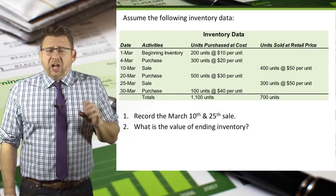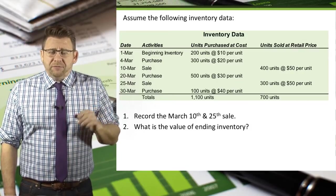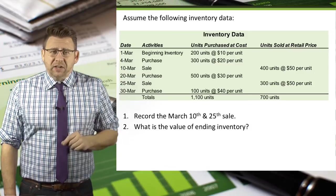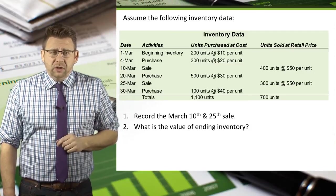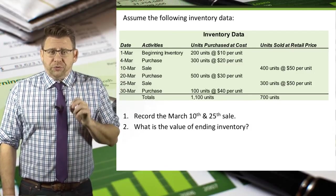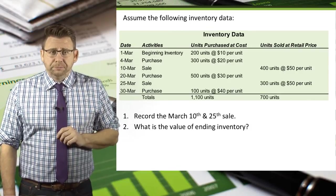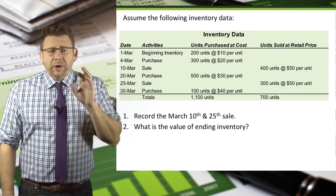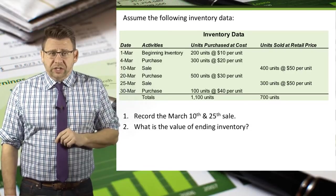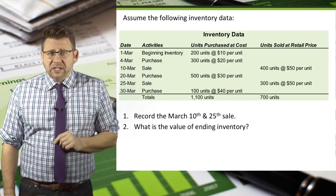Let's assume the following inventory data. March 1st, beginning inventory is 200 units at a cost of $10 each. March 4th, we purchased an additional 300 units at a cost of $20 each. March 10th, we sold 400 units at $50 each — that's the retail price, not the cost.